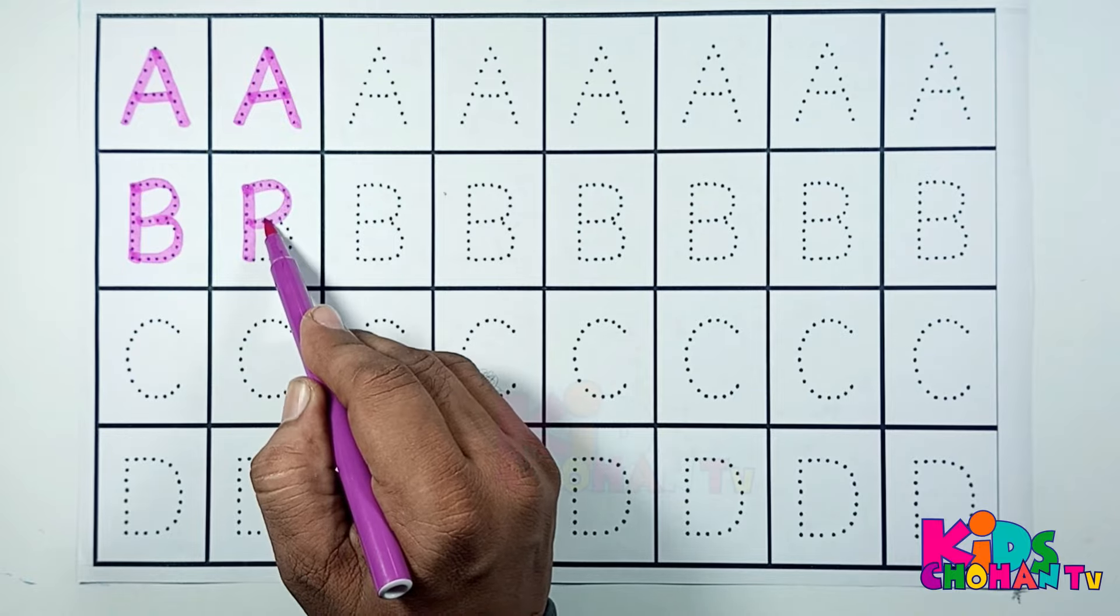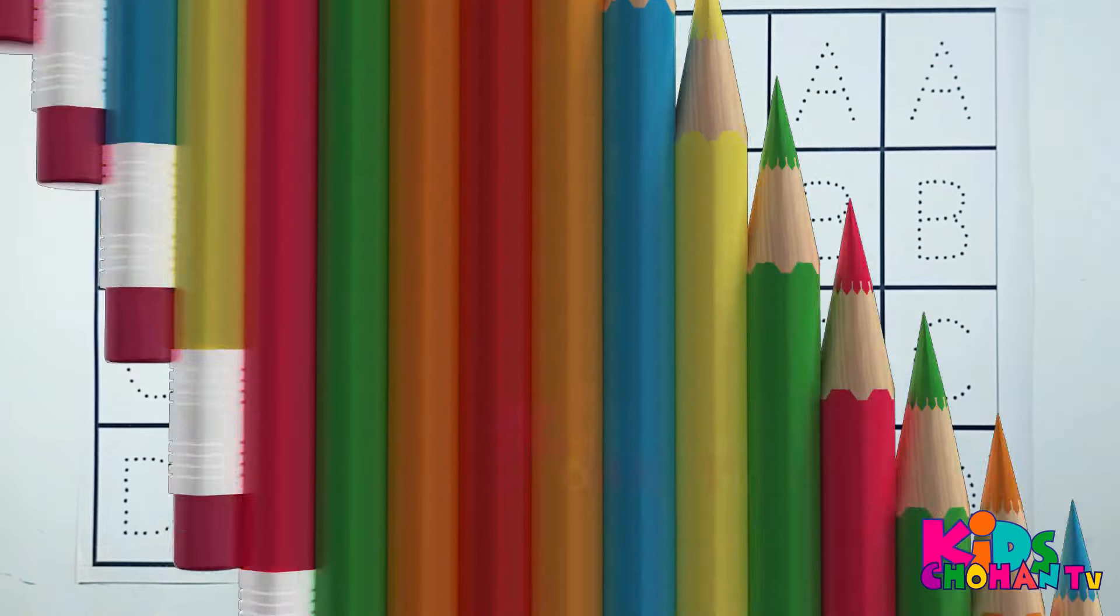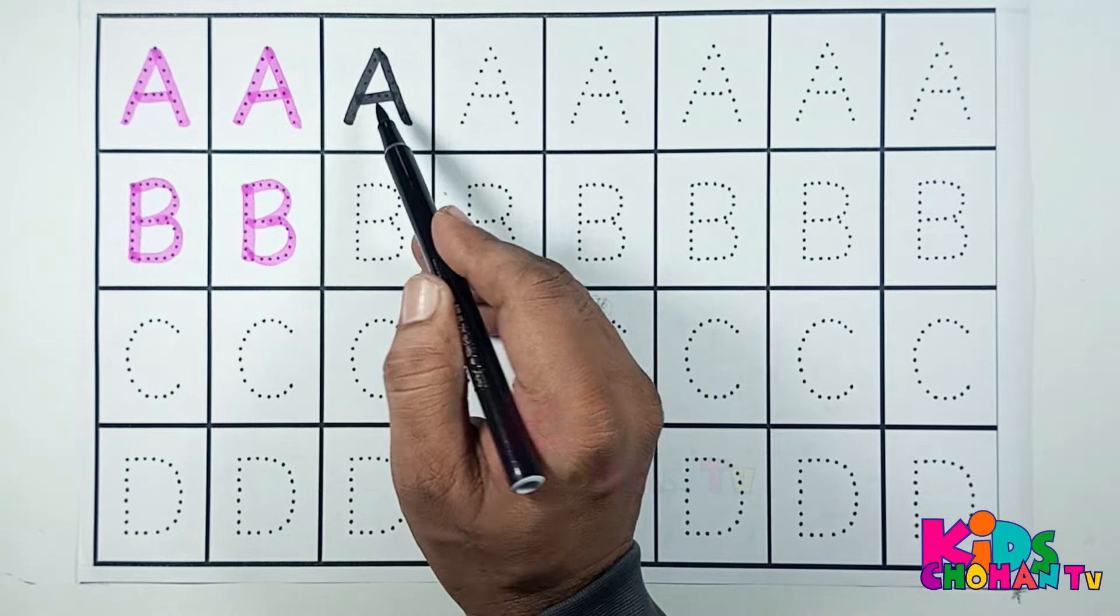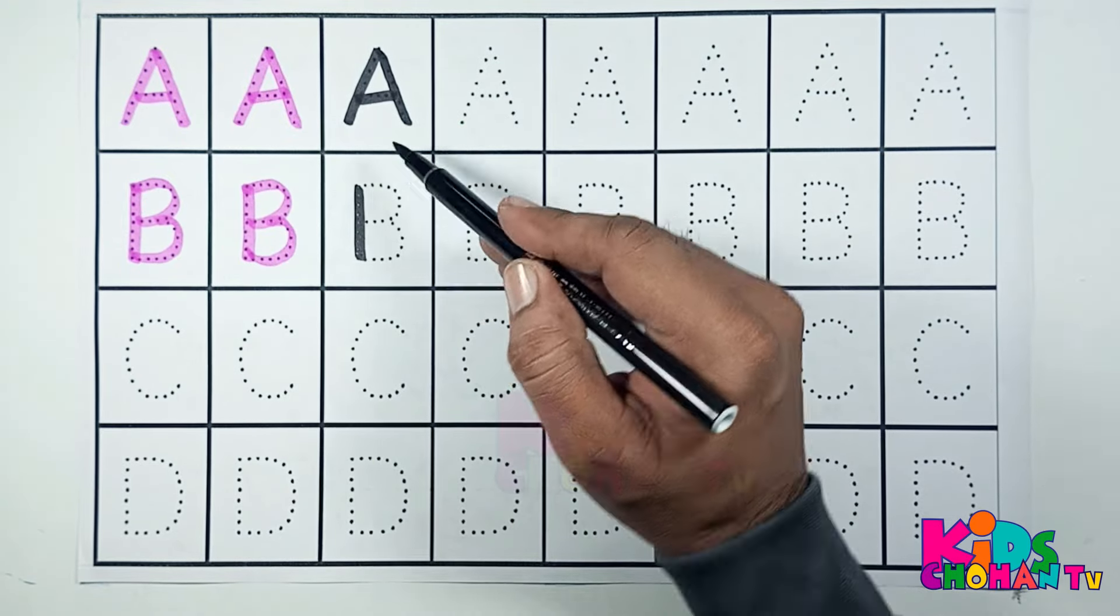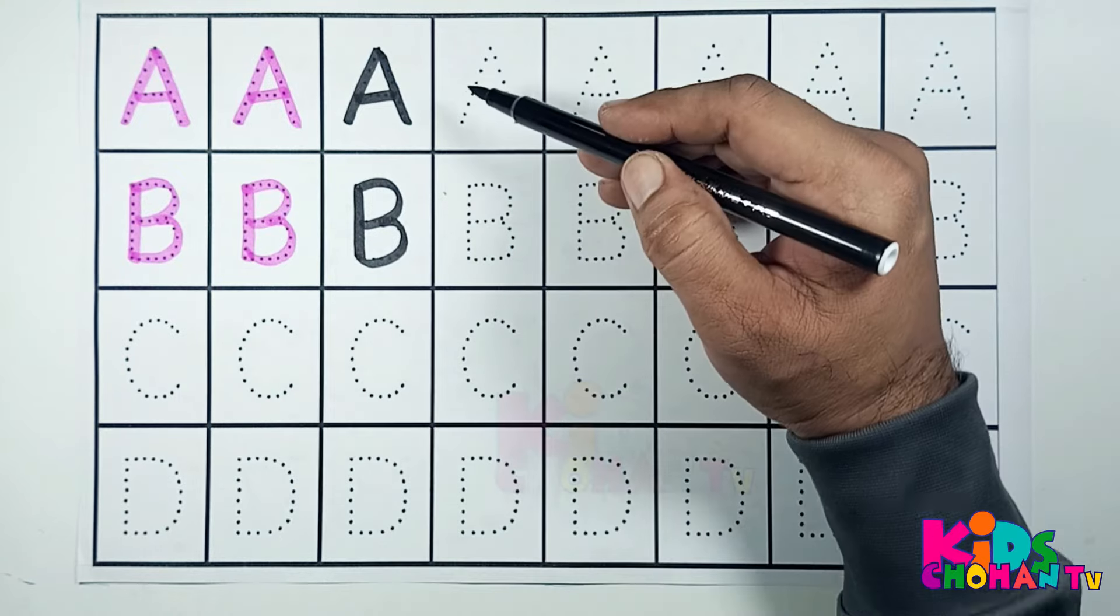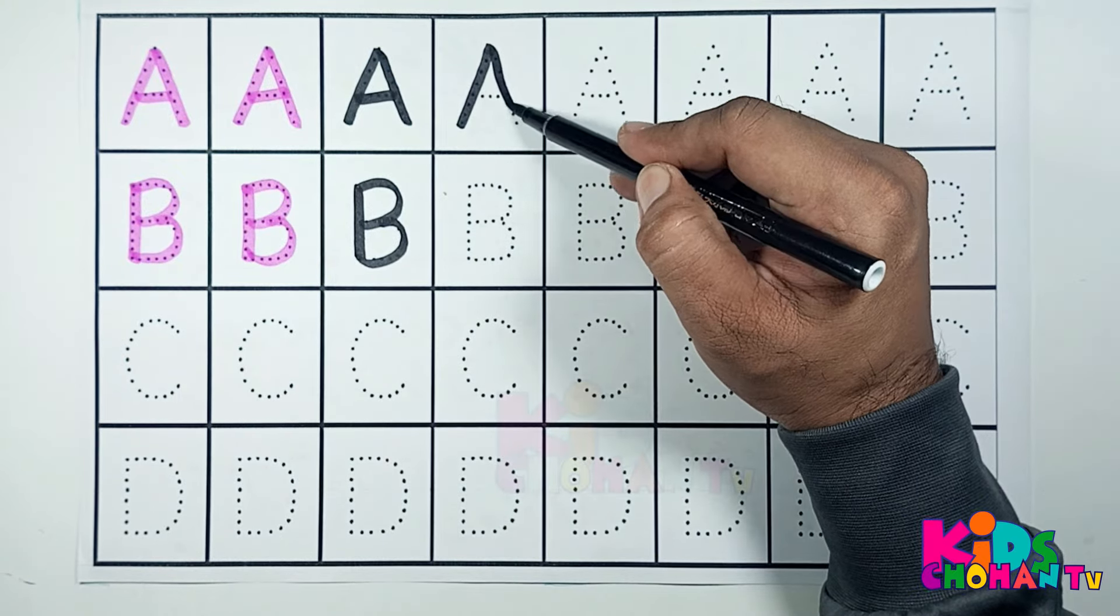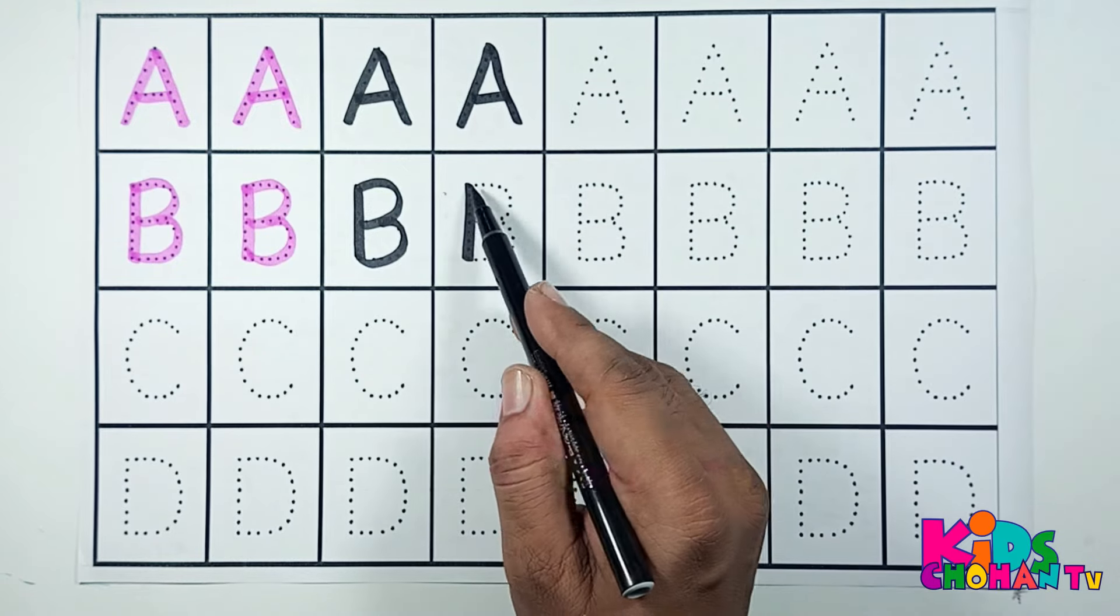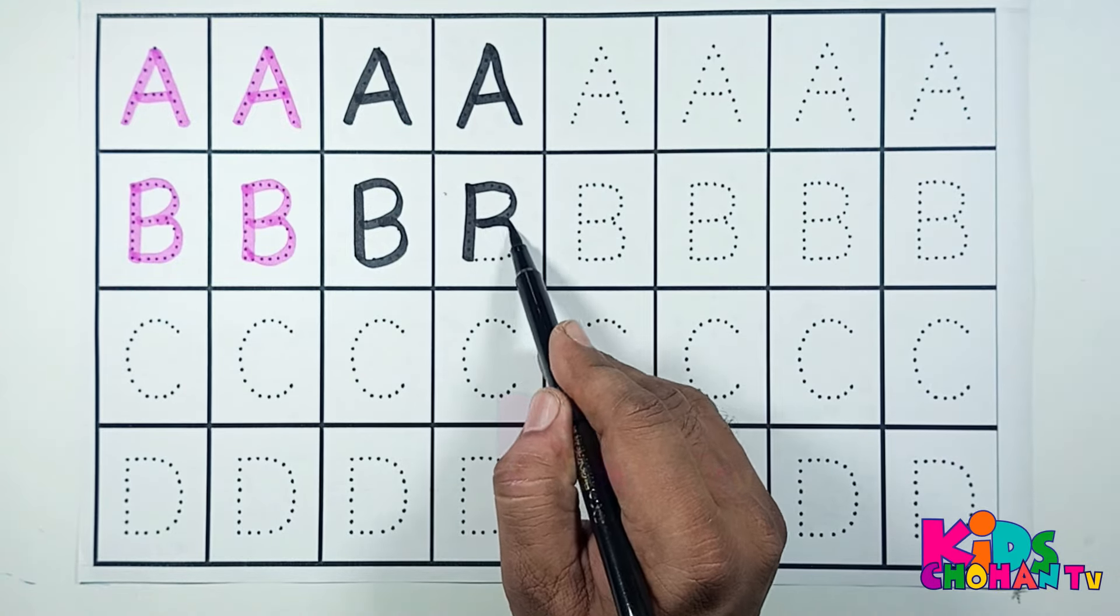A, B, A. A for apple, B for ball. A for ant, B for bat.